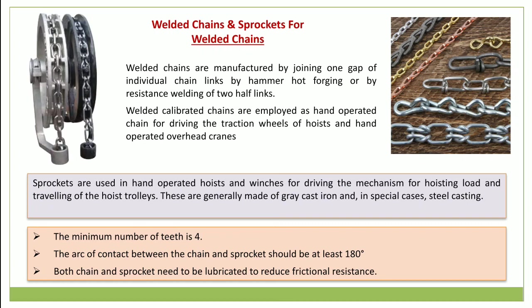The sprockets used for welded chains in hand-operated hoists are generally made of gray cast iron, and in special cases, steel castings. The periphery of the sprocket is cast to conform to the shape and size of the links of the chain used. Alternate links sit at right angles to each other. Sprockets are made with a minimum number of teeth for compactness and low cost — the minimum number of teeth is 4. The arc of contact between the chain and the sprocket should be at least 180 degrees to avoid jumping of the chain. If the arc of contact is less, a chain guide or guide block is provided. Both chain and sprocket need to be lubricated to reduce frictional resistance.